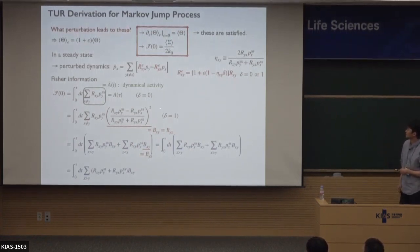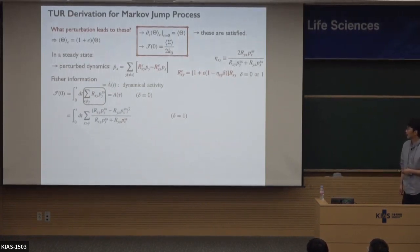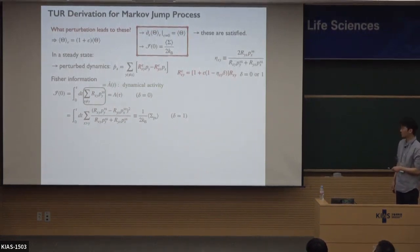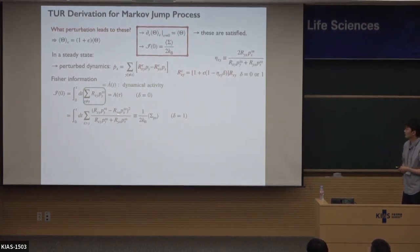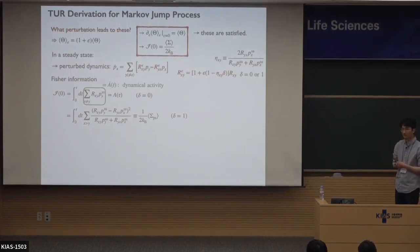Using the definition of b_xy and plugging it into the expression, the denominator cancels out, leaving a simpler expression for the delta equal to one case. We call this quantity the pseudo entropy production. It is not equal to the real entropy production, but in the overdamped limit of the Markov jump process, pseudo entropy production approaches real entropy production. In the Markov jump process it remains different from real entropy production.